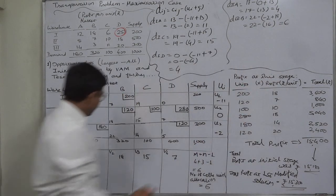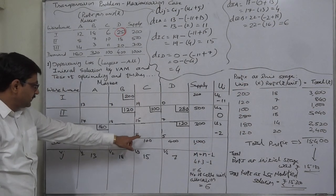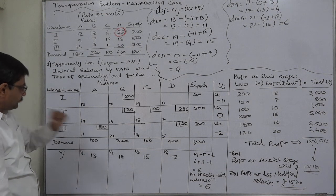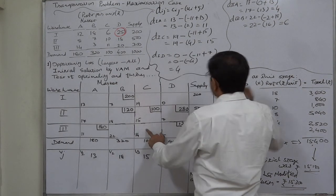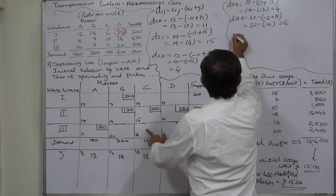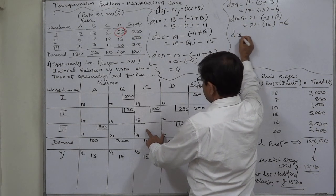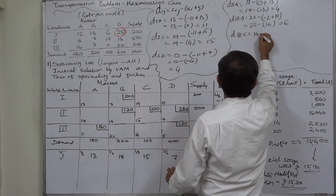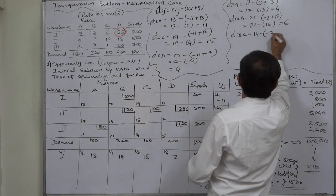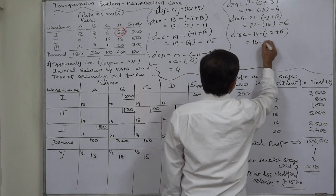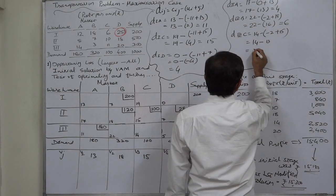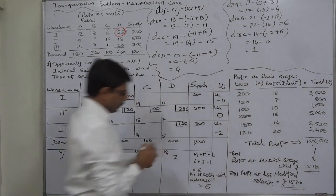And the last empty cell, d3c: 14 minus relevant u minus 2 plus relevant v 15, so it is 14 minus 13, ultimately it is positive 1.